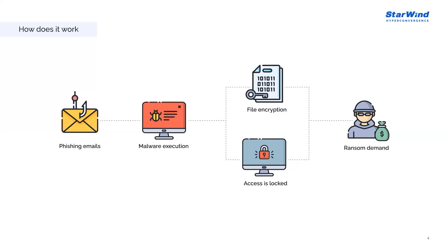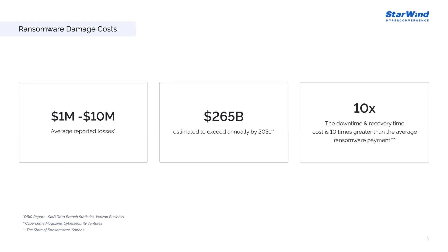Moving to facts and statistics for the past two years — there is no good news about ransomware. Attacks continue to increase as cybercriminals use data infiltration and the threat of data leaks to increase pressure on companies to pay the ransom. Even if a company can restore data from backups, leaked data from a company that refuses to pay may appear on dark web sites operated by threat actors. Education, government, and healthcare are the top three sectors to experience ransomware attacks in 2022, but the focus here is on the SMB market.